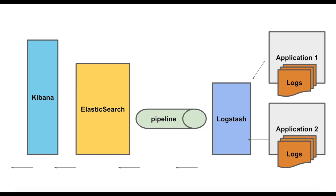Let us take a look at this pictorial representation of what actually happens in the background. You have application one and application two. The logs are then fed to Logstash. Logstash transfers this data in a pipeline to Elasticsearch. Elasticsearch indexes the data and then feeds it to Kibana, where the user uses the Kibana console to look at the logs of the applications.